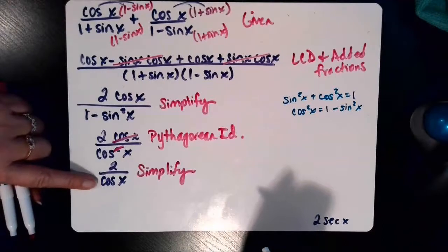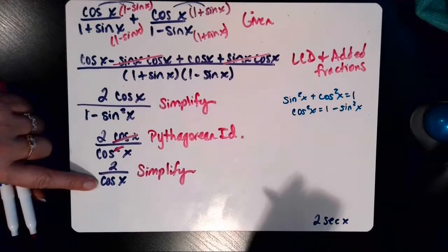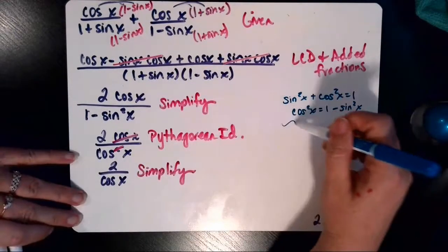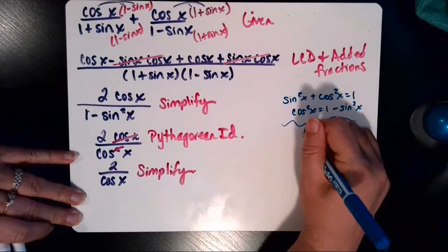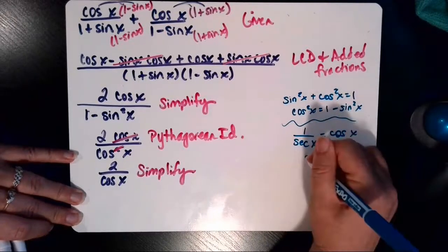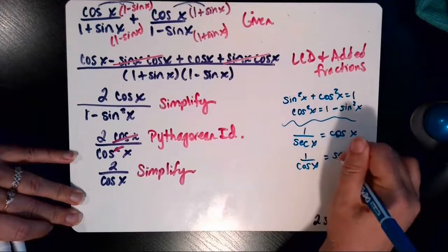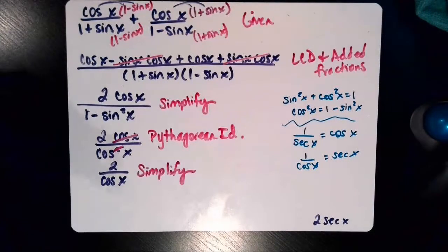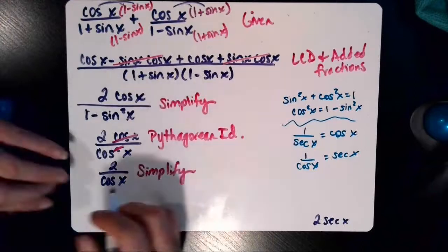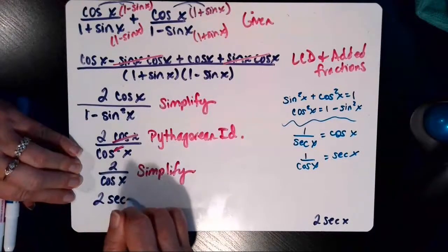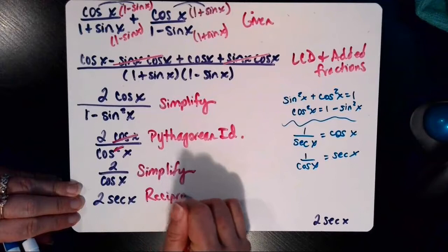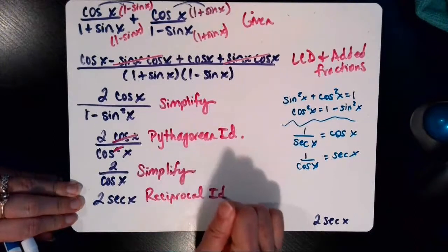And if you recall, cosine, its reciprocal is secant. So I can change 1 over cosine, because now this would be using a reciprocal identity. 1 over secant is equal to cosine, and 1 over cosine is equal to secant. Those are the reciprocal identities for secant and cosine. So using this reciprocal identity, I can conclude that this is equivalent to 2 secant of x. And that's applying the reciprocal identity that we just discussed.